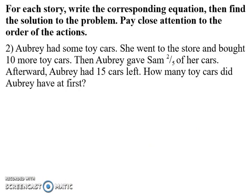Now let's look at how it changes with the second problem. Here Aubrey started with some cars, and she bought ten more cars. So here we go to C plus ten. Then Aubrey gave two-fifths of her cars to Sam. So it was the amount she has right here and then two-fifths of that. So it was the C plus ten minus two-fifths of that C plus ten.